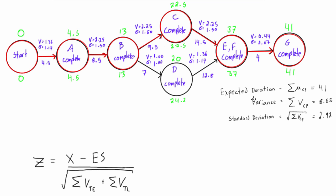Welcome back. In this video we are learning about how to find the probability that a certain node in a network diagram for a PERT problem will have a certain float or slack. Some people say float, some people say slack — it's the same thing.